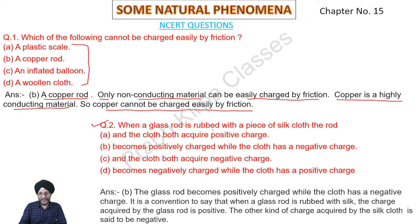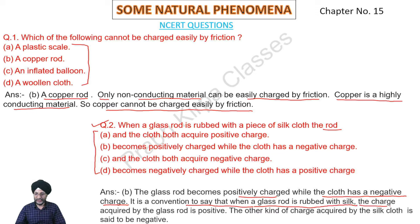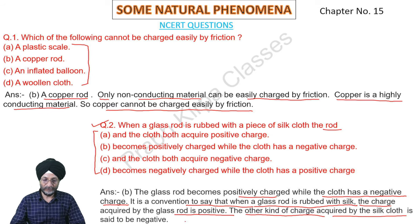Question 2: When a glass rod is rubbed with a piece of silk cloth, the correct option is the glass rod becomes positively charged while the cloth has a negative charge. It is a convention that when a glass rod is rubbed with silk, the charge acquired by the glass rod is positive, and the charge acquired by the silk cloth is said to be negative.